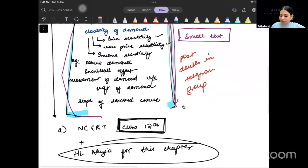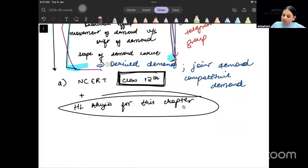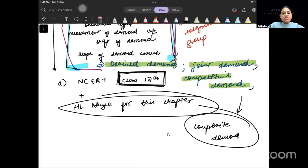You can write: study about derived demand also. It can be asked in exam. Study about joint demand, competitive demand, and composite demand. These are words that may not be in any book but can be asked in exam. Just know their definition in one line.